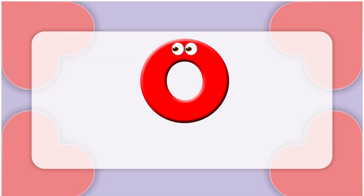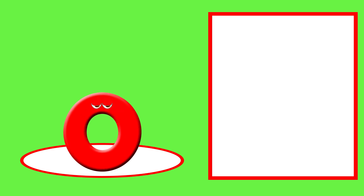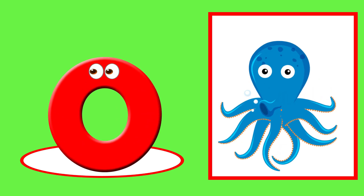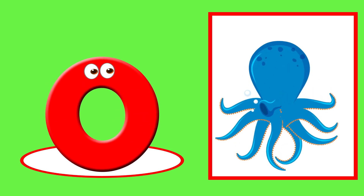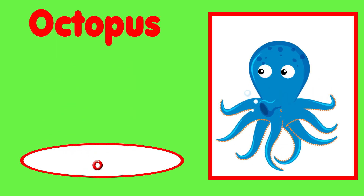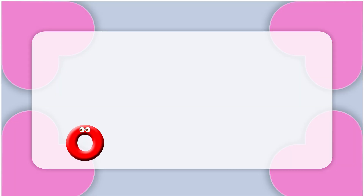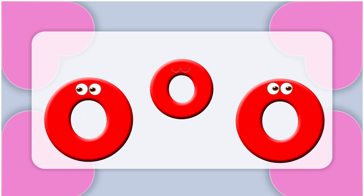This is the letter O. O is for octopus — o, o, octopus. O is for ostrich — o, o, o.